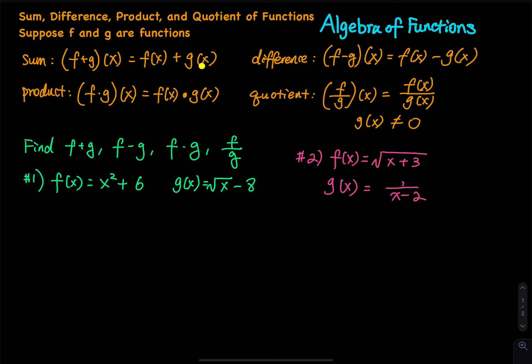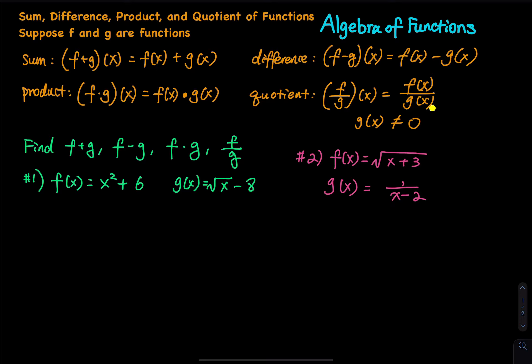All you have to do is add two functions together. For the difference you subtract them. For the product you multiply them. For the quotient you divide them: f of x divided by g of x.